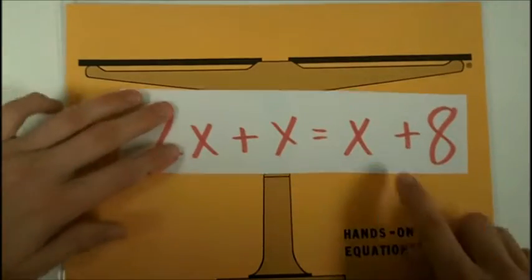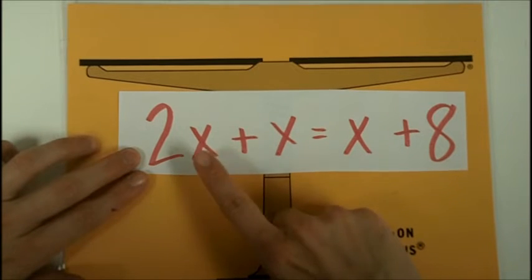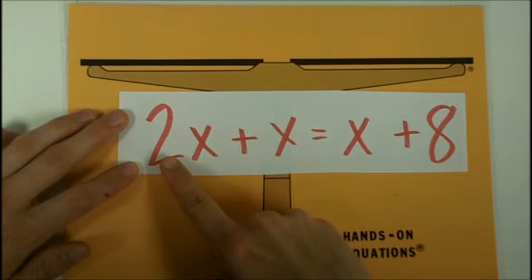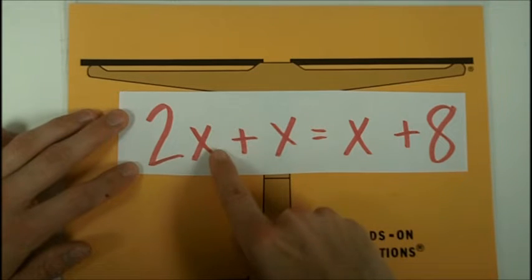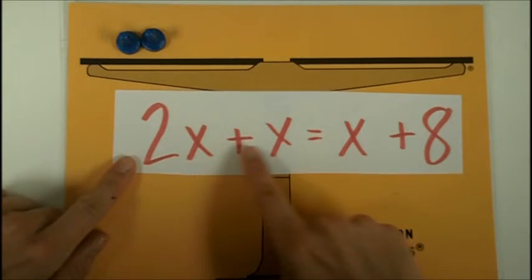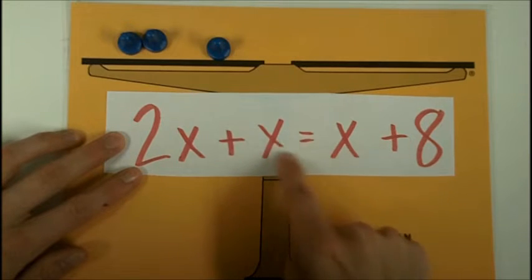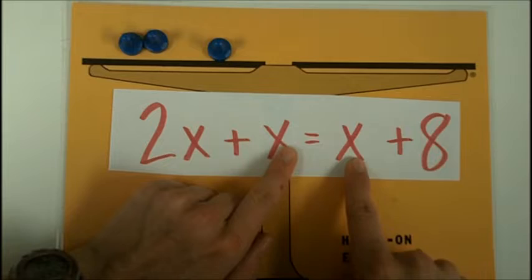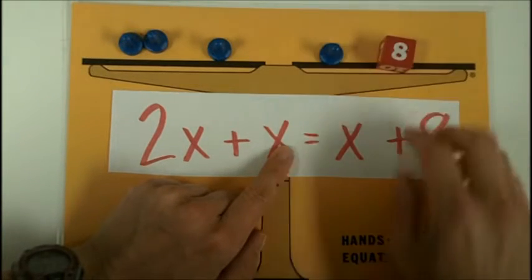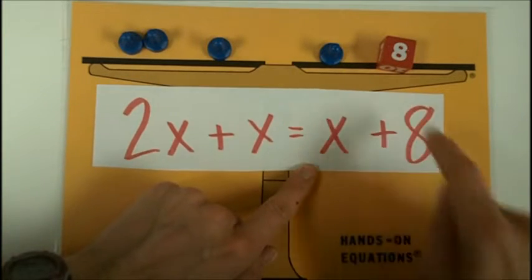For example, this equation we can place on the mat by reading it, remembering that the x represents the pawn. This expression right here is two x's, two pawns. So we're going to place on two pawns to represent two x's. Then we're going to add another one on the same side, still on the left side of the equal side. Then, now we've moved over to the right side of the equal sign, we're going to add a pawn for this x and an 8 number cube. So two x's plus another x. On the other side, we have an x and an 8.